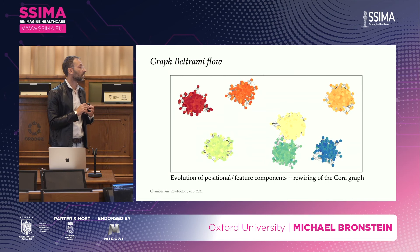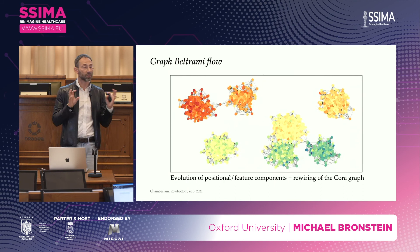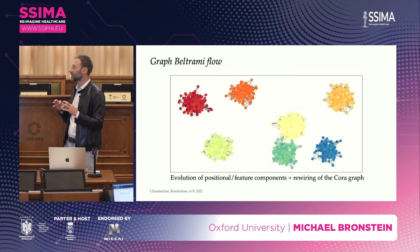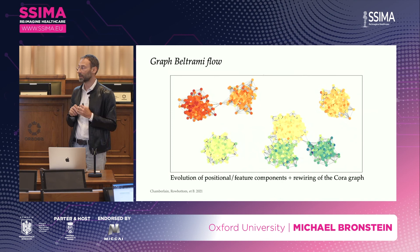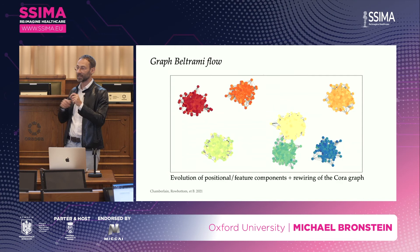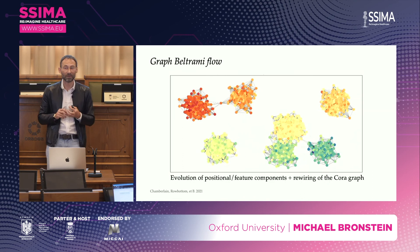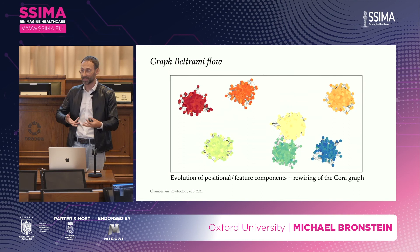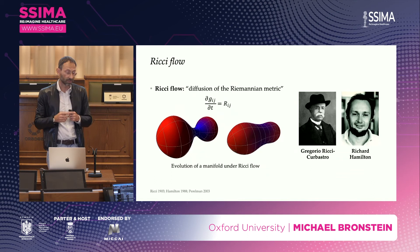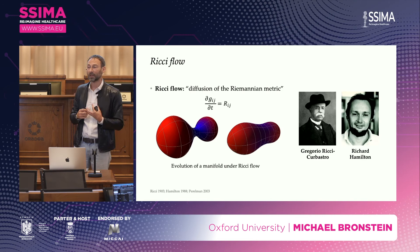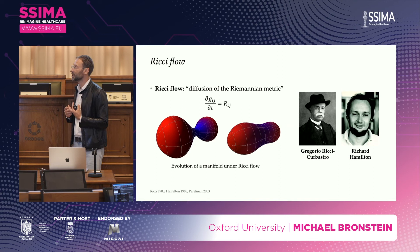A small example shows a graph where node colors represent features (a low-dimensional projection) and positions represent positional encoding. The graph changes on the fly during a node classification task with seven classes. As we evolve, clusters become more prominent and the graph also changes. This is a bit disturbing for people coming from signal processing — having a filter on a domain that evolves under your feet. But this is a very common approach in differential geometry, where you can take a Riemannian manifold and evolve it.